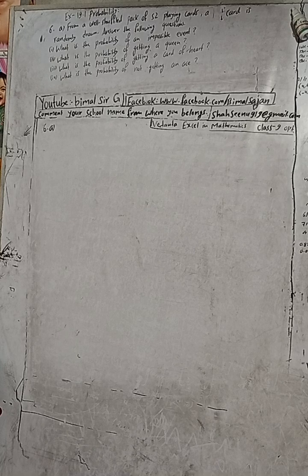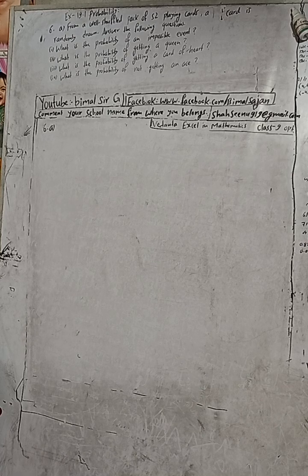Hi class 9 and 10 students, welcome back to Bimal Sarji's YouTube channel. This is question number six, exercise 19.1, probability chapter — Vedant Excel in Mathematics, that is C Mathematics class 9. Check the playlist, and if you don't find any videos in the playlist, then comment here.